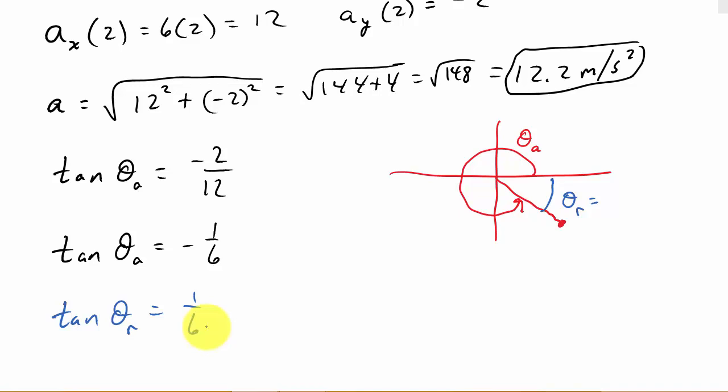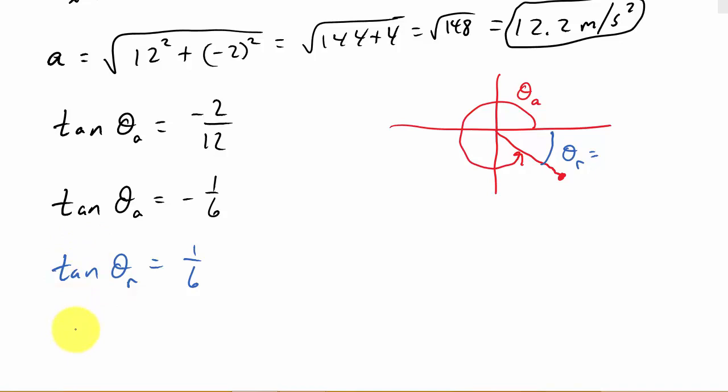That tells us θ_r—I'll do the inverse tangent of 1/6. The inverse tangent of 1/6 gives us, rounding to 1 decimal, 9.5 degrees.